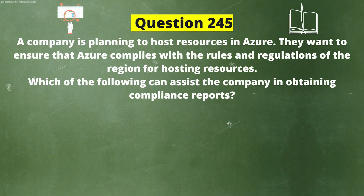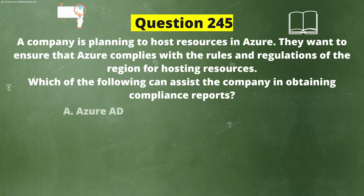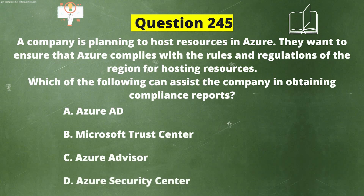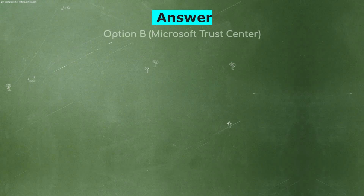Next question. A company is planning to host resources in Azure. They want to ensure that Azure complies with the rules and regulations of the region for hosting resources. Which of the following can assist the company in obtaining compliance reports? Option A: Azure AD. Option B: Microsoft Trust Center. Option C: Azure Advisor. Option D: Azure Security Center. The correct answer is Option B, Microsoft Trust Center.